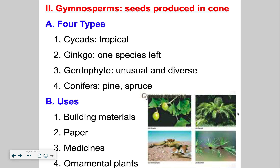Gymnosperms are one type of seed plant, and these are seeds that are produced in a cone. The word gymnosperm actually means 'naked seed' because it's not enclosed by a fruit. There are four types of gymnosperms. The cycads, which are found in tropical regions — they almost look palm-like. The ginkgos — there's only one species left. They produce these berries, and when the berries fall they actually smell disgusting, like vomit. Gustavus Adolphus had one on campus and during certain times of year you just didn't walk that pathway.